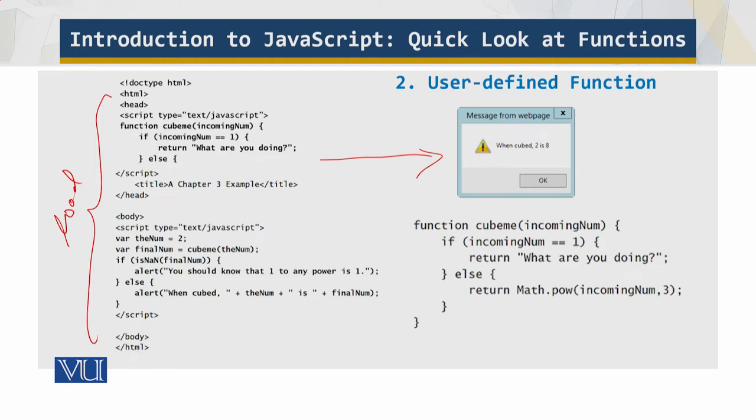And the code declares a function cubeme within the head section of the document like this. This is the cubeme I am talking about. This code accepts an argument called incoming number, incoming number over here within the function.